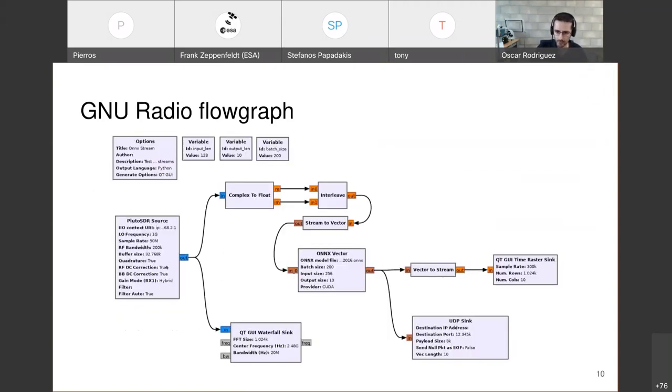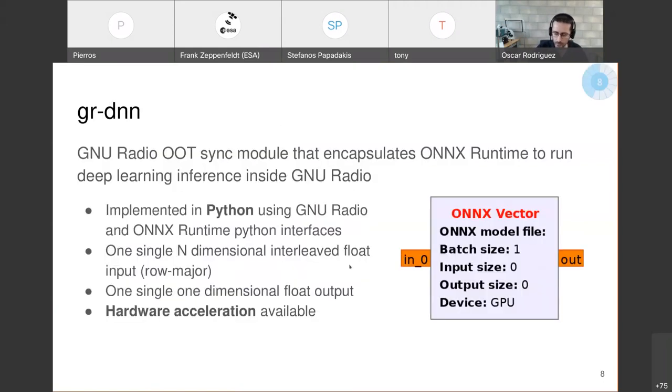Here you have an example of how you can use the block in order to run inference inside GNU Radio. In this case, we are using a Pluto SDR source. And in this case, we are using a very similar model as the one described before for modulation classification. So we are using an input of 128 samples, which means that we are going to be feeding the model 256 float points, 128 for I and 128 for Q. Here, because these kind of blocks only support one dimensional data, you have to take into account